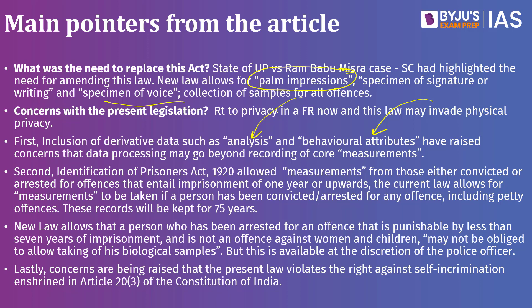As mentioned, the earlier law said your imprints would only be taken if imprisoned for one year or more. The current law allows measurement to be taken if you are arrested for any offense — even over speeding — and your record will be kept with the government for 75 years. There is one interesting point: if you are arrested for an offense for which punishment is less than seven years and the offense is not against women and children, you have an option to say no to giving your biological samples.